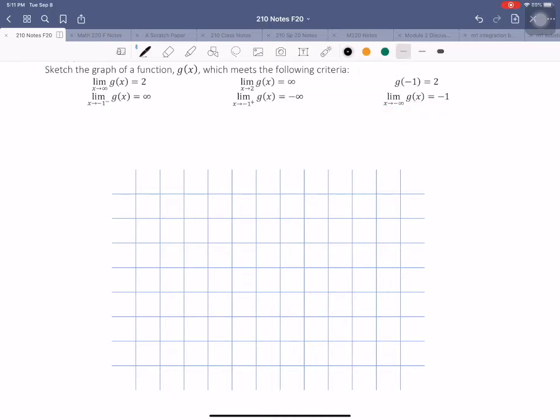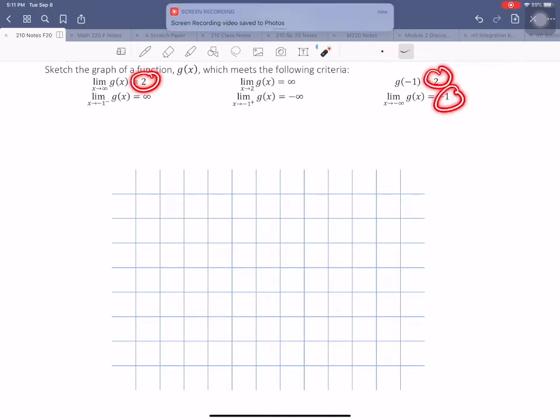Let's begin by sketching our axes. And along the vertical axis, I just want to make sure I have space for positive 2 and negative 1.